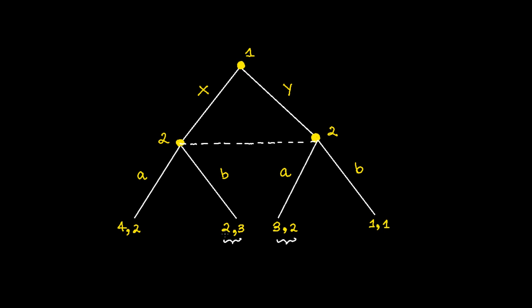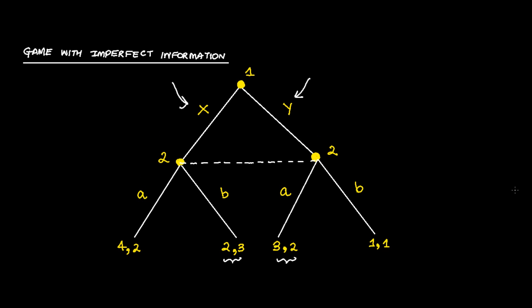Now, since player 2 doesn't know whether player 1 has chosen x or he has chosen y, player 1 wants player 2 to actually choose this strategy so that his payoff is maximized. He can fool player 2 into thinking that he has chosen x while in reality he has chosen y. This is just an introduction to the game. In a later recording, I'm going to tell you how to solve these games with imperfect information. This was just an introduction to what is an information set and what are the characteristics of information sets.